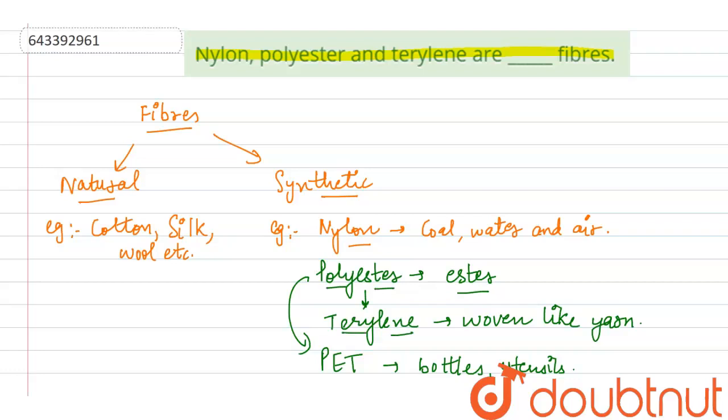So polyester, terylene and nylon, these three are categorized as synthetic fiber. The correct answer here is that nylon, polyester and terylene are synthetic fibers.